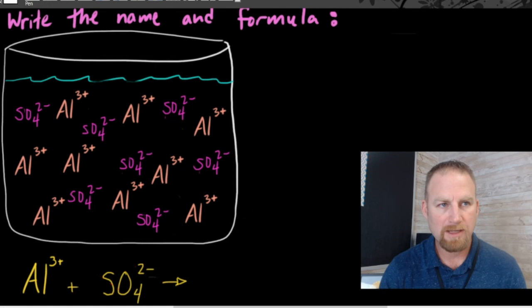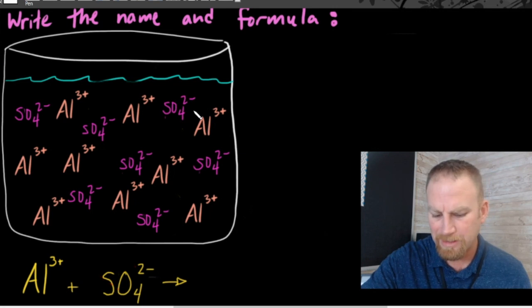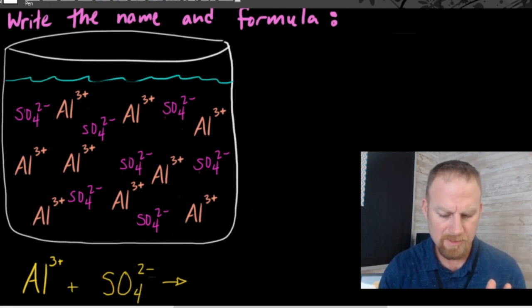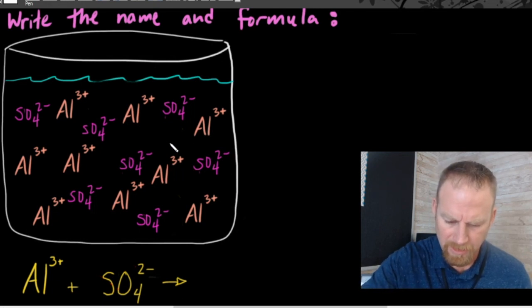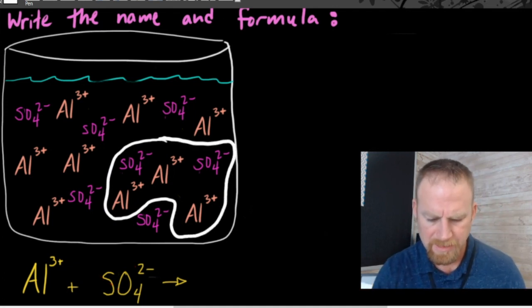So how many do we need of each to get to six? Let's look at that. So if I have two aluminums, that gives me six. And that means I would need three sulfates to get six negatives. Because if I have six positives and six negatives, again, together, that would equal zero. So how could I circle that? Let's see. Let's take a look at this one right here. If I circle this and think about how they would combine, is that right?